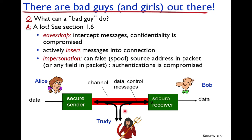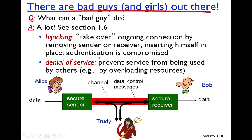The attacker can also actively insert messages into a connection — Trudy sends a message to Bob while pretending it is from Alice, so Bob assumes it is from Alice. This is impersonation or spoofing. The attacker can fake or spoof the source address or any field in the packet, which compromises authentication.